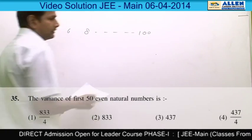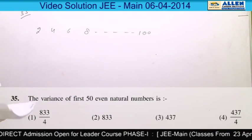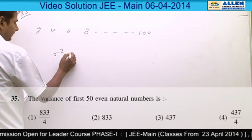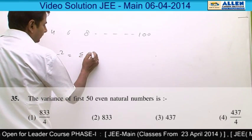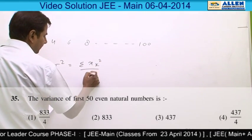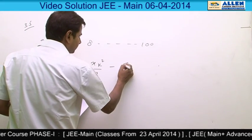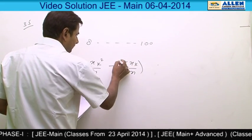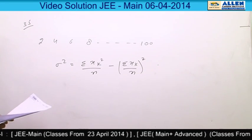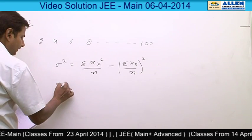To find variance, the formula of variance is: variance equals sigma x_k square upon n minus sigma x_k upon n whole square. So first we have to find out sigma x_k square.